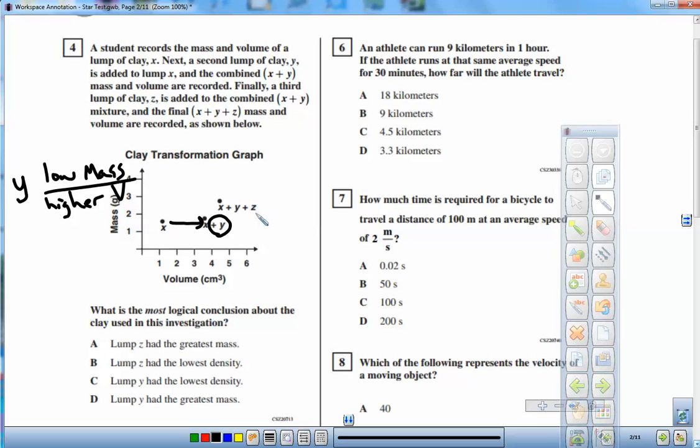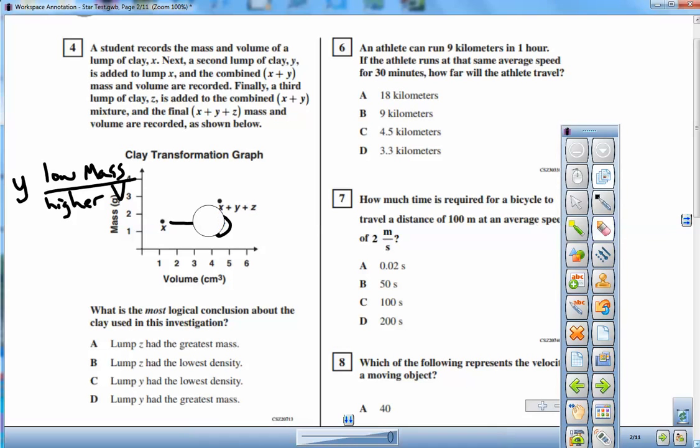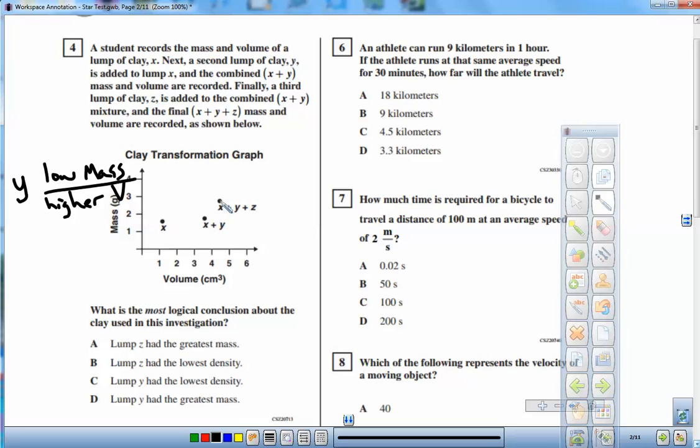When we add z to all this, I'm going to erase this right now. When we add z, notice that adding z to this x plus y amount makes the point go up and to the right, about the same amount each time. So like to the right and to up, about the same amount.